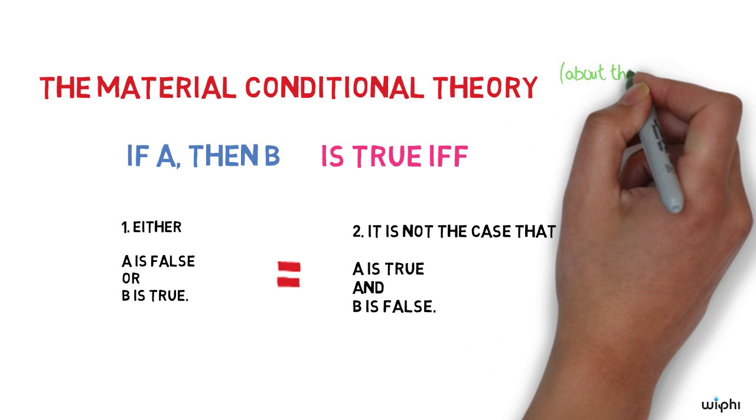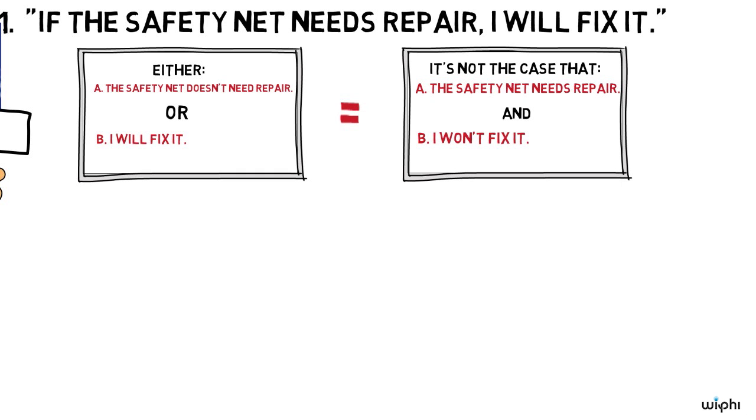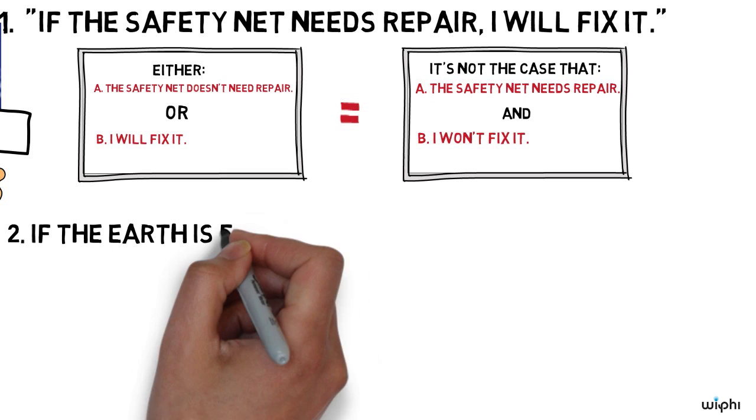Maybe we need to turn to another example. Since the material conditional theory is a theory about the meaning of every conditional sentence, we can change the sentence slightly to see if we have clearer intuitions. Here's a different made-up conditional.